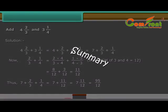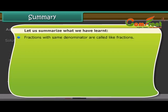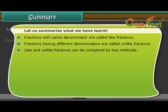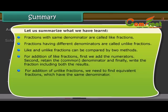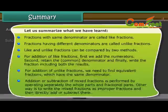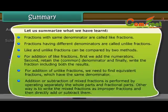Let us summarize what we have learned. Fractions with the same denominator are called like fractions. Fractions having different denominators are called unlike fractions. Like and unlike fractions can be compared by two methods. For addition of like fractions, first we add the numerators, then we retain the common denominator, and finally write the fraction including both results. For addition of unlike fractions, we need to find equivalent fractions which have the same denominator. Addition or subtraction of mixed fractions is performed by operating separately on the whole parts and fractional parts, or by writing the mixed fractions as improper fractions and then directly adding or subtracting them.